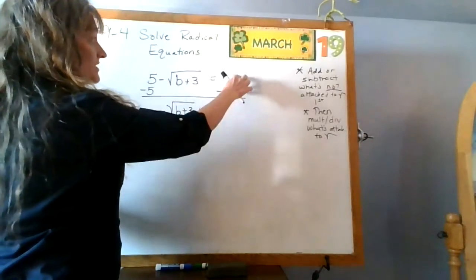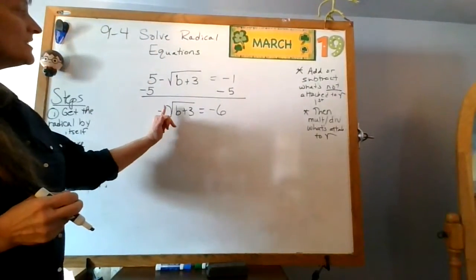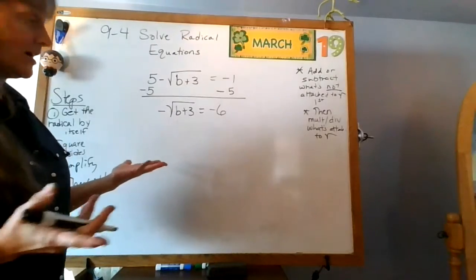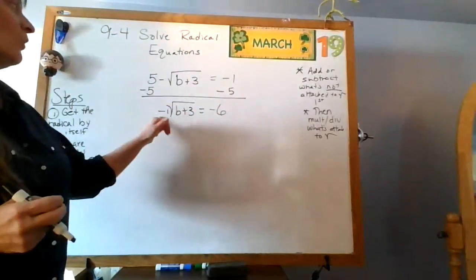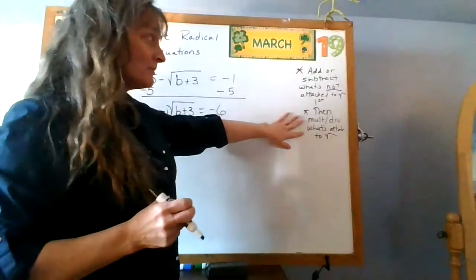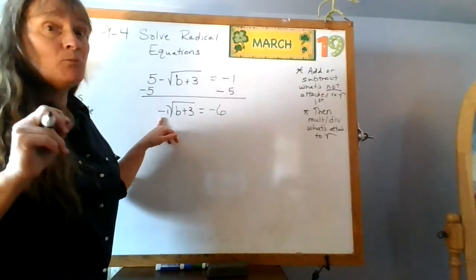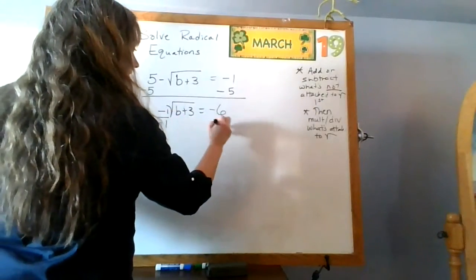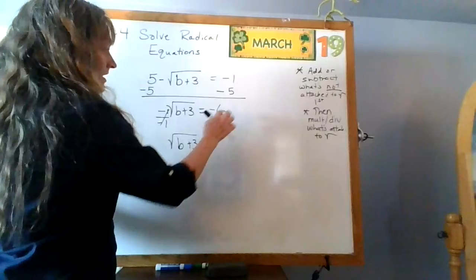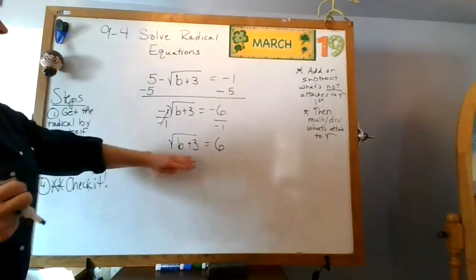So I subtract five — add or subtract what's not attached first. That goes away; don't forget: negative of the square root of b plus three equals negative one plus negative five, which is negative six. Now, what's in front of the radical? We don't see it, but there's always a one — in this case, it's negative one. Since it's negative one, I must divide both sides by negative one. That cancels, giving me the square root of b plus three.